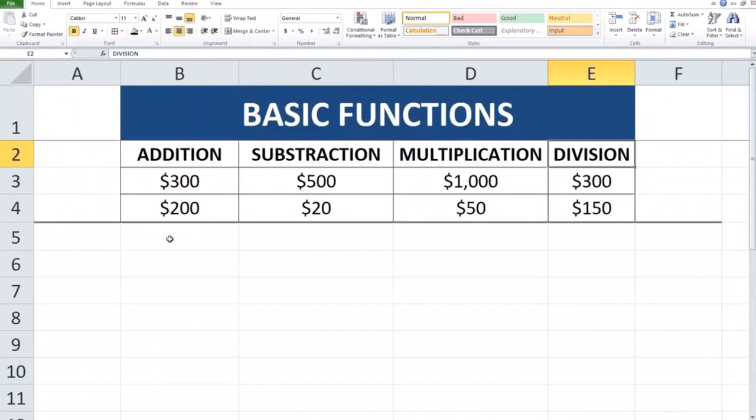So basically when you're trying to do addition, you want to add multiple cells together to obtain a value. So you click on the cell where you want your value to show up.